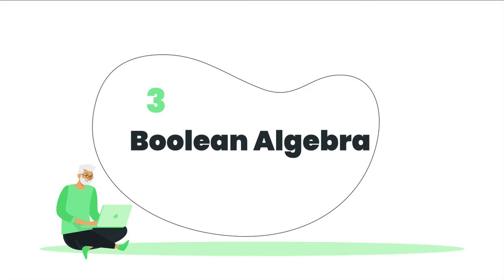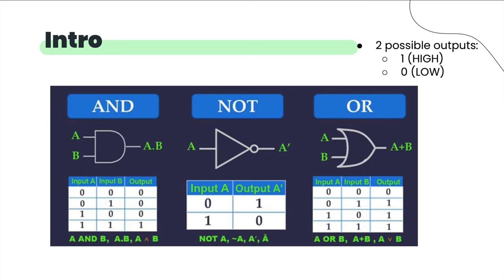Now we're going to talk about boolean algebra. How many of you have taken any sort of logic class or have a logic background? This will give you a high-level understanding of how boolean algebra and logic gates are used and implemented in computers. We have three different basic gates: AND, NOT, and OR.